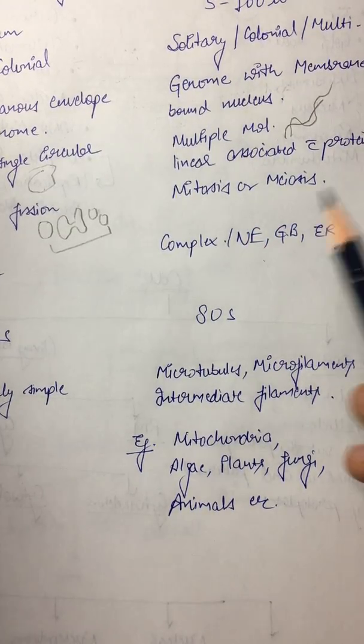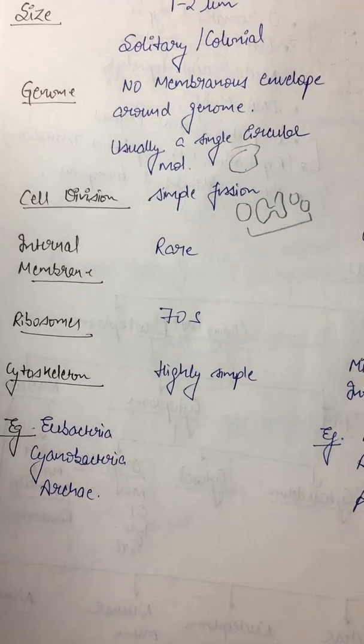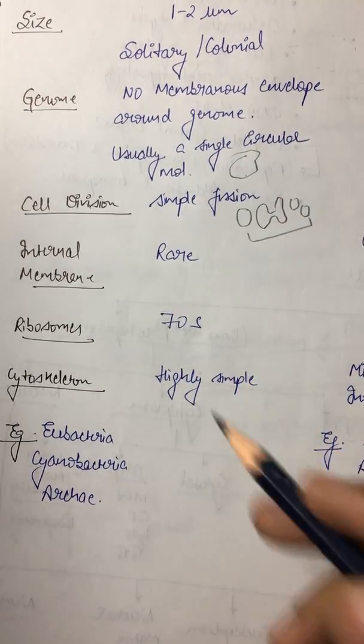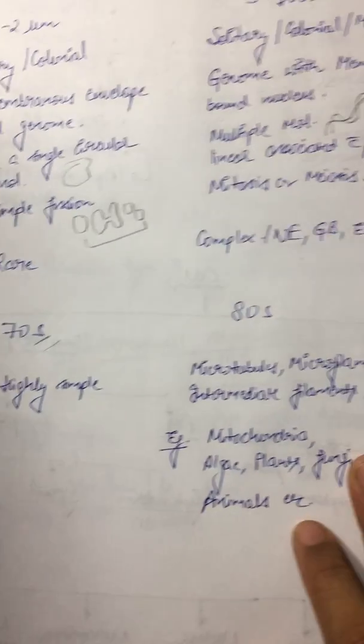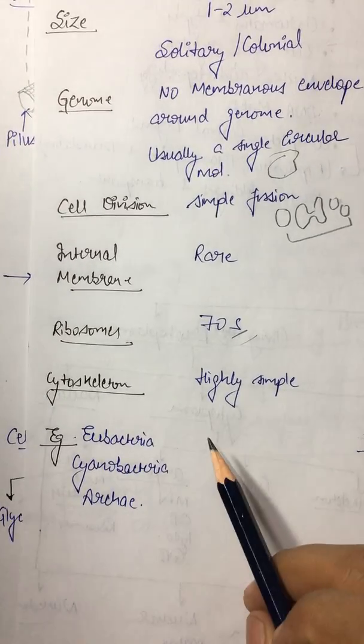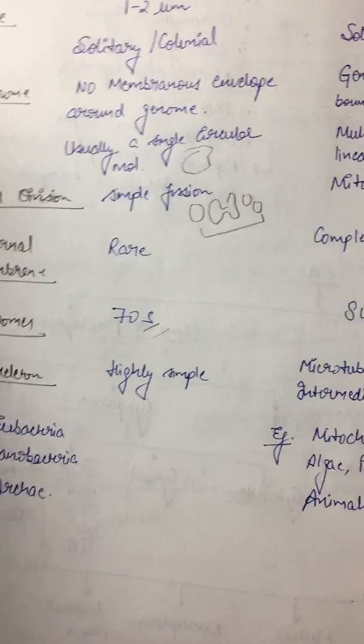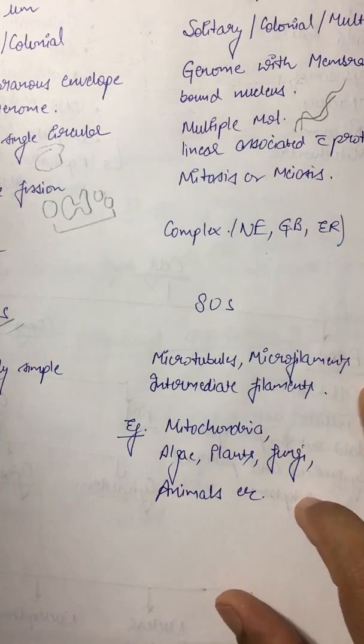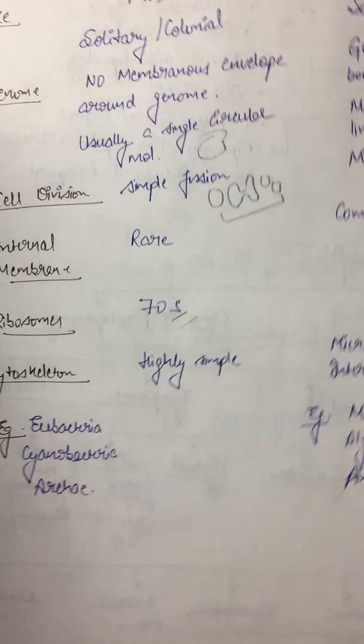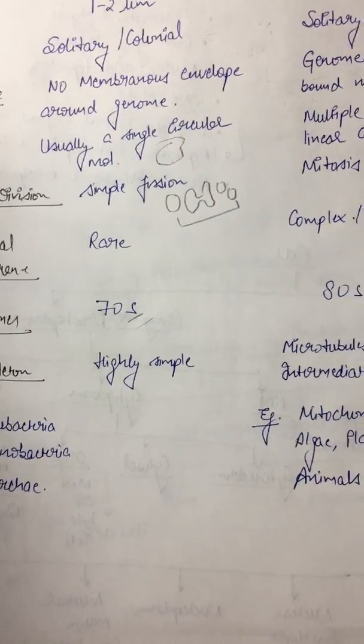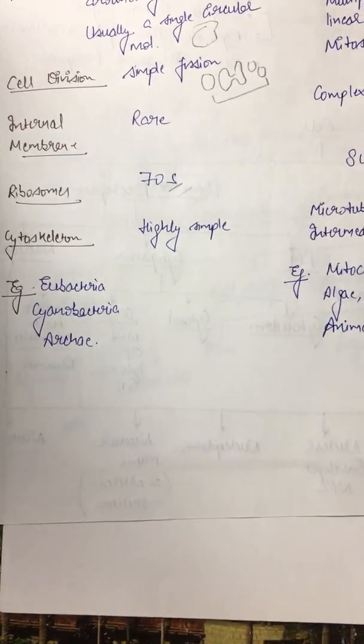Ribosome: 70S is the sedimentation coefficient in prokaryotes, and in eukaryotes it's 80S. Then cytoskeleton is highly simple in prokaryotes, whereas in eukaryotes it's microtubules, microfilaments, intermediate filaments. The examples for prokaryotes are eubacteria, archaebacteria, and cyanobacteria.